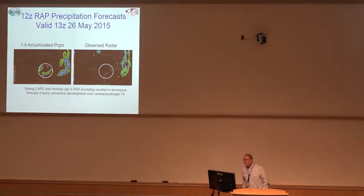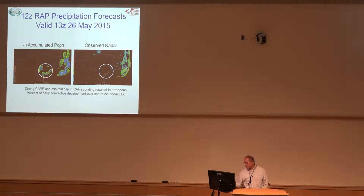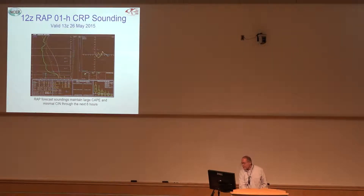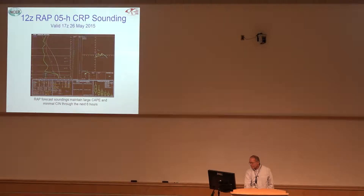First hour of the forecast from 12 to 13Z shows precipitation in southeast Texas — there's the radar on the right. Let's take a look at the forecast soundings. This is the one-hour forecast: no inversion, lots of instability. Two hour, three hour, four hour, five hour, six hour — over the first six hours it doesn't recover. Sometimes you may see the model build the inversion in once it gets into balance, but we don't see that here.